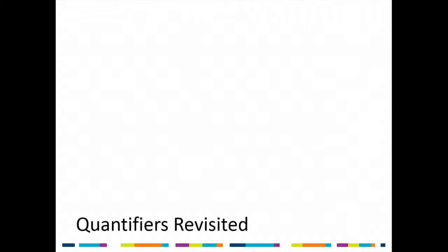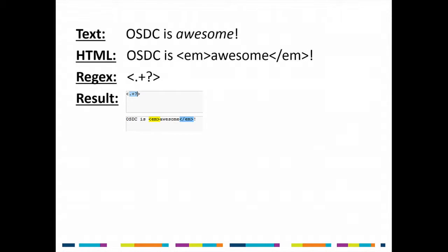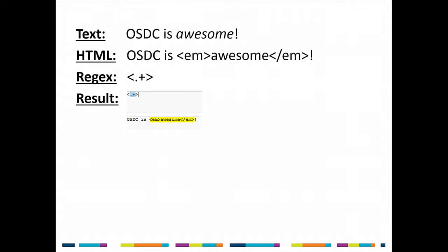Greediness: if you say there should be a parenthesis, at least one character, and a closing parenthesis, the regex goes all the way to the end of the string to match as much as possible — matching the whole thing. Non-greedy, when you add the question mark, does the opposite: it matches as little as possible. It matches the first pair of parentheses, then goes further looking for another opening parenthesis, finds the next one, and matches that too. Greedy gives you one match; non-greedy gives you multiple.